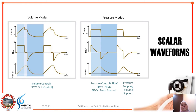Now let's talk about the scalar waveforms. On the left side is what you expect to see with volume mode — the volume is the static target, and the flow is in a square waveform. On the pressure mode side, the pressure is the static maximum target, and the flow is in a decelerating pattern. The volume in pressure mode will change with every breath because it is not the set target.